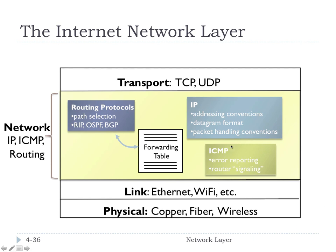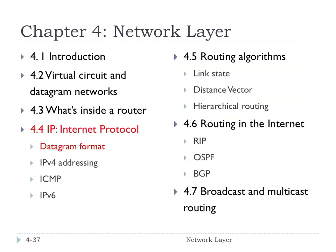ICMP is sort of a little minion of IP — another little protocol that sits right on top of IP and does error reporting. It allows routers to talk to each other when they need to send signals to each other, but it's not really at the transport layer. It really is just a helper protocol for IP. Let's jump into the first section: the datagram format for IP.